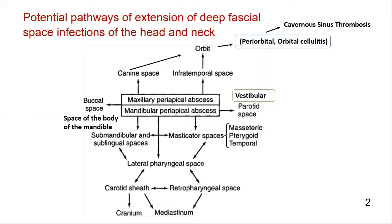This is a flowchart showing the potential pathways of extension of deep facial space infections of the head and neck. It shows the infection arising from the maxillary and mandibular teeth. Infections from the maxillary teeth spread to the vestibular, buccal space, canine space, infratemporal space, orbital space, and cavernous sinus.